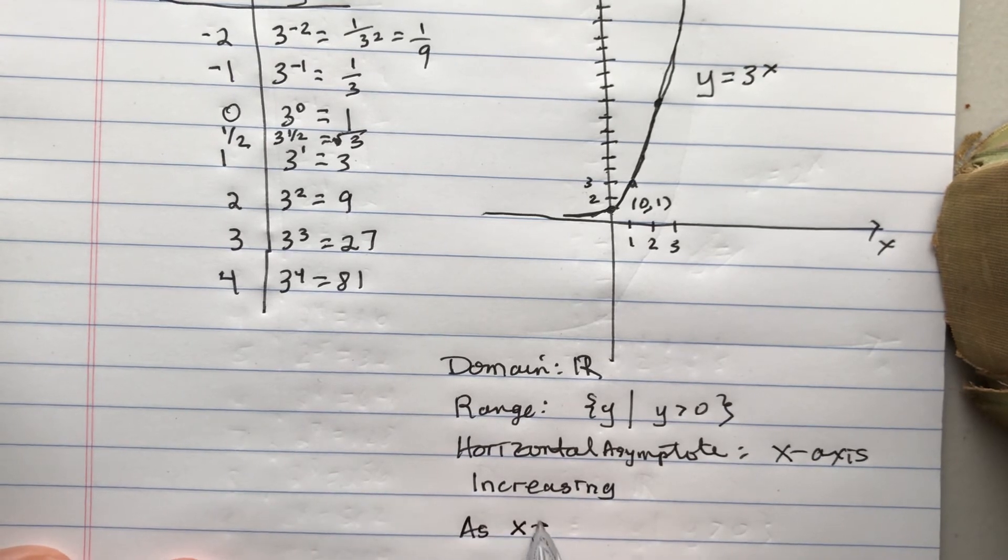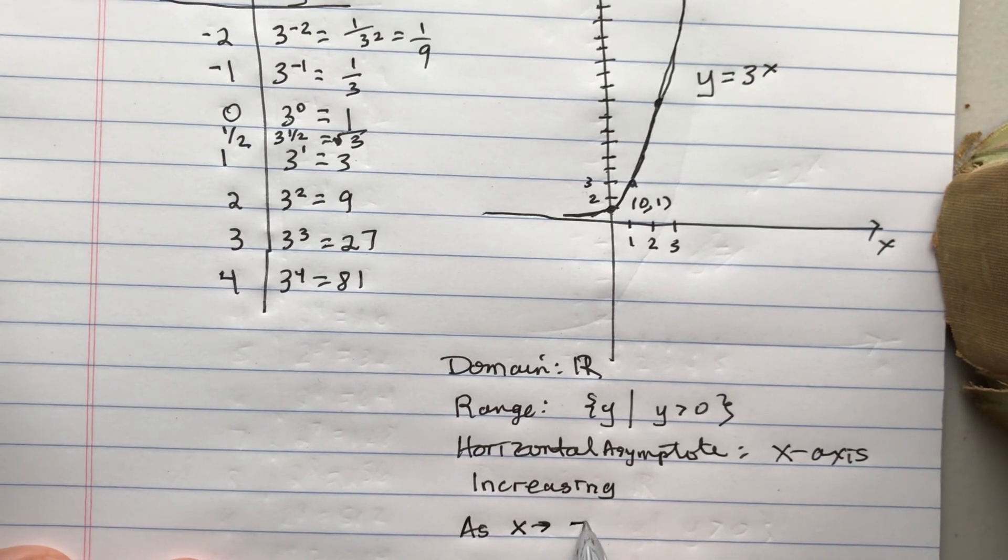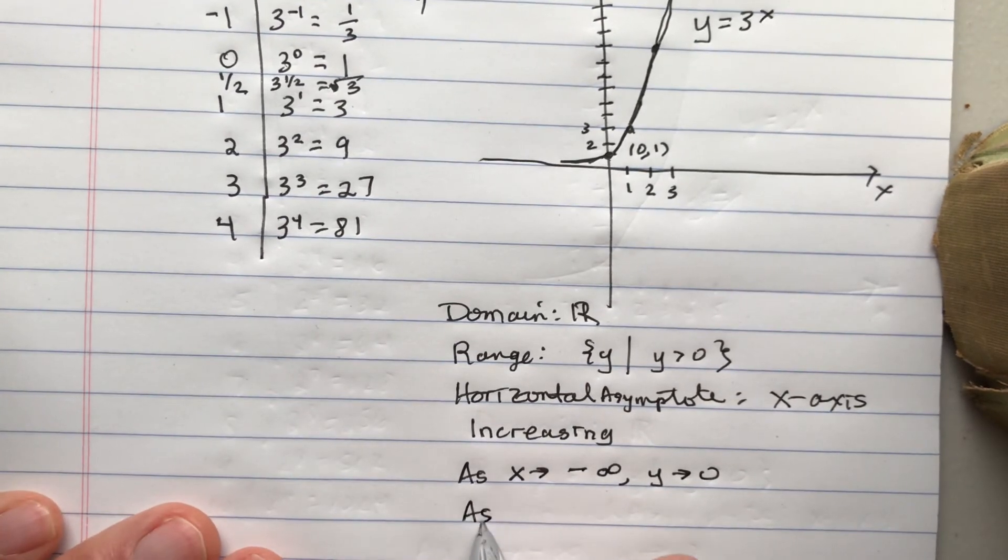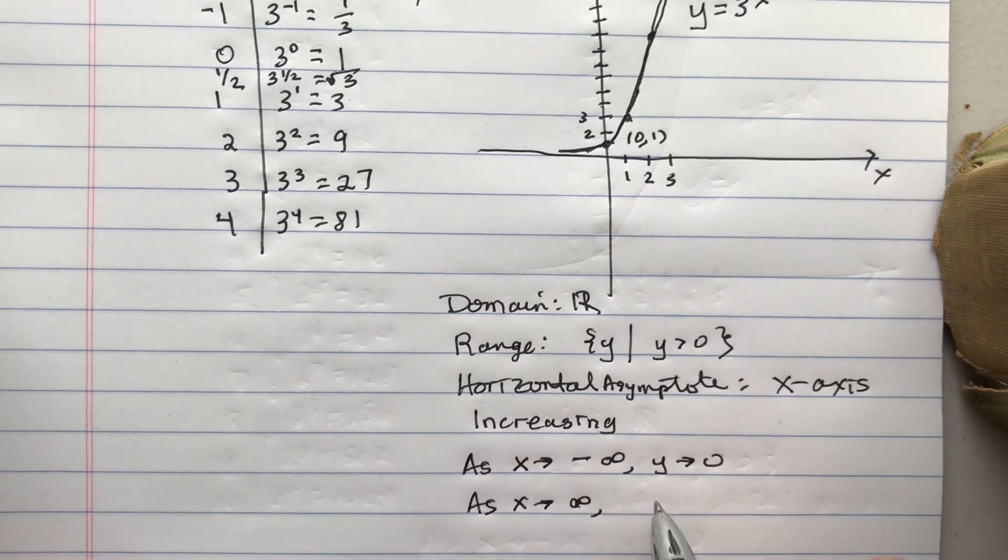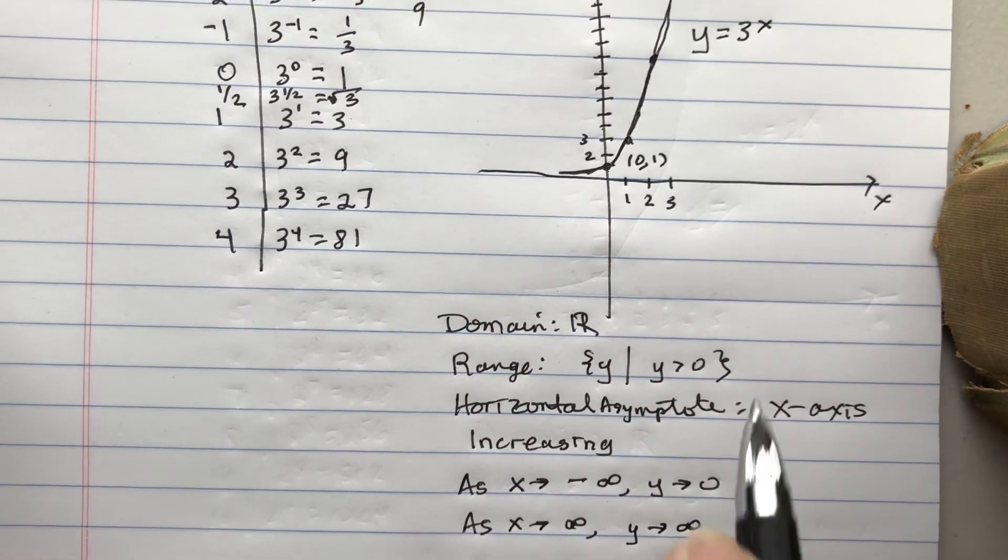As x goes to negative infinity, y approaches 0. As x approaches infinity, infinity is not a number, but as x goes to infinity, we might say y goes to infinity. So we see that from the graph.